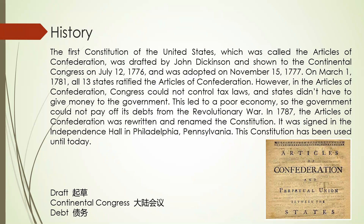正常速度. The first Constitution of the United States, which was called the Articles of Confederation, was drafted by John Dickinson and shown to the Continental Congress on July 12th, 1776, and was adopted on November 15th, 1777. On March 1st, 1781, all 13 states ratified the Articles of Confederation. However, in the Articles of Confederation, Congress could not control tax laws, and states didn't have to give money to the government. This led to a poor economy, so the government could not pay off its debts from the Revolutionary War. In 1787, the Articles of Confederation was rewritten and renamed the Constitution. It was signed in the Independence Hall in Philadelphia, Pennsylvania. This Constitution has been used until today.